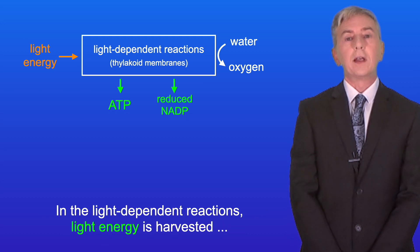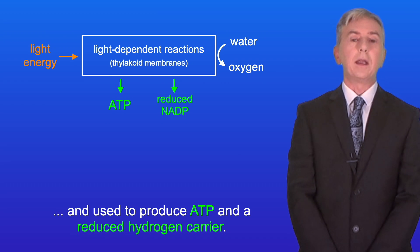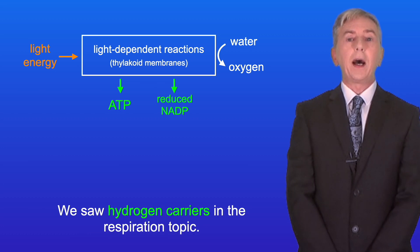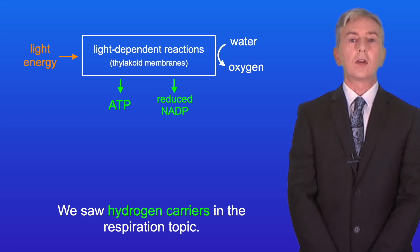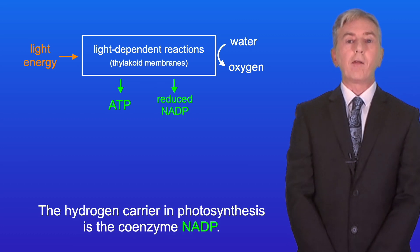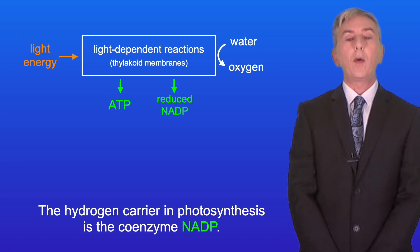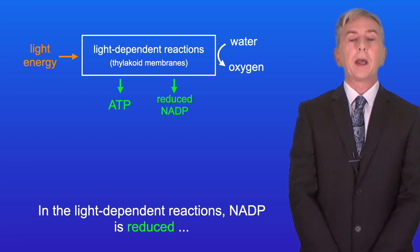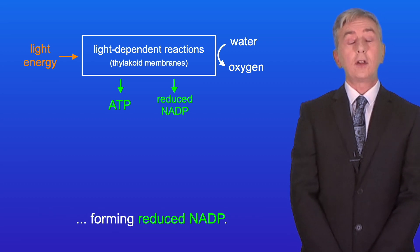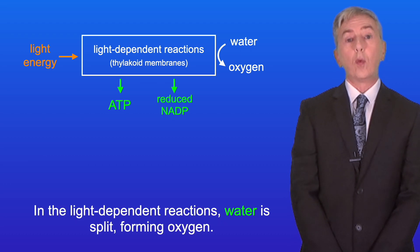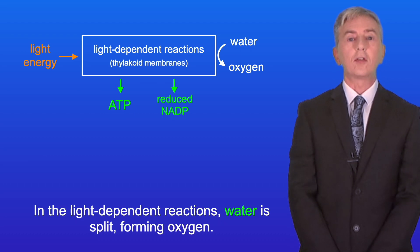In the light-dependent reactions, light energy is harvested and used to produce ATP and a reduced hydrogen carrier. Now we saw hydrogen carriers in the respiration topic. The hydrogen carrier in photosynthesis is the coenzyme NADP. In the light-dependent reactions, NADP is reduced, forming reduced NADP. And in the light-dependent reactions, water is split, forming oxygen.